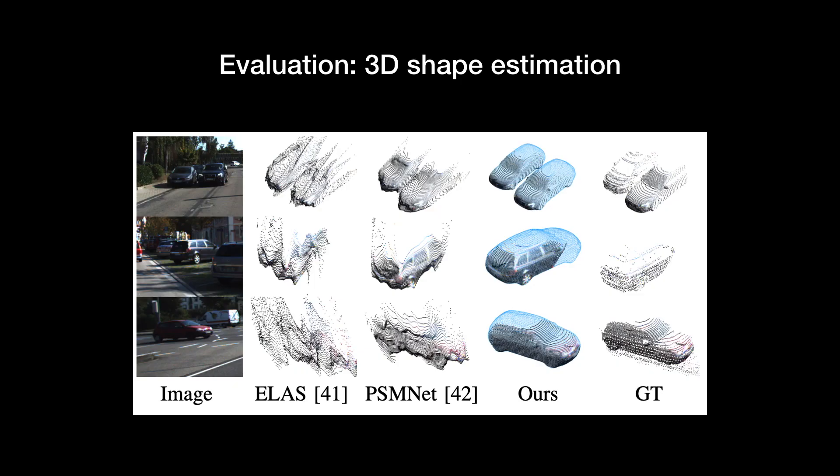In the following, we pick some experiment results to demonstrate the effectiveness of our method. For shape estimation, we compare our 3D reconstruction to the results of two stereo matching methods. ELAS is a handcrafted pipeline, and PSMNet is a recent deep learning-based approach. The advantage of bringing shape priors to the 3D reconstruction pipeline is clear, especially for objects with non-Lambertian surfaces like cars.